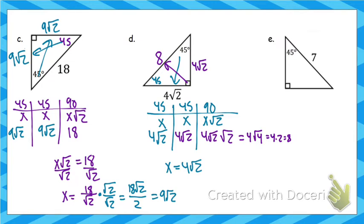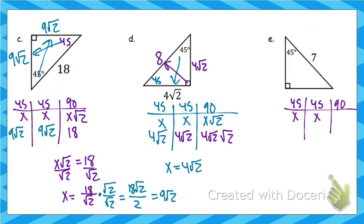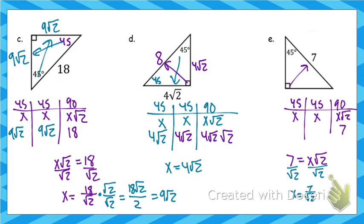Let's look at the last 45-45-90 example. If you feel comfortable, pause the video and try this one on your own. For 45-45-90: x, x, x√2. Since 7 is across from 90, we set x√2 equal to 7 and divide by √2. Rationalizing by multiplying top and bottom by √2 gives 7√2 over 2. So across from both 45-degree angles is 7√2 over 2.